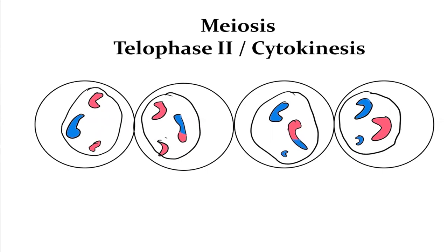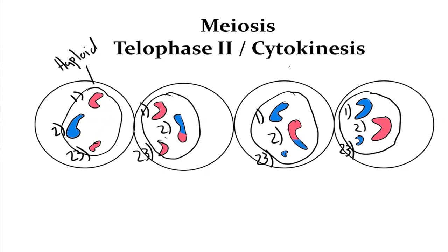After two rounds of meiosis — meiosis I and II — what we end up with is four cells that are all genetically different from one another. Each one of these cells is haploid, having only one of the chromosomes for each pair. No two are identical. Two of them might be close since they share similar chromosomes, but because of the crossover event that happened in prophase I, the chromosomes are slightly different — giving us some genetic variation.